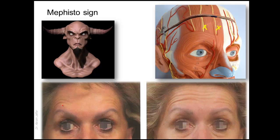Mephisto is short for Mephistopheles, a devil that appears in a number of legends and fictional works. You can see the shape of his eyebrows elevated on the lateral side. Botox injections in the frontalis muscle should not be confined to the mid-pupillary lines — the injection should extend lateral to the mid-pupillary lines to prevent the formation of the Mephisto sign.